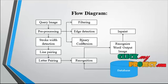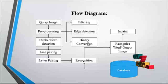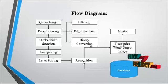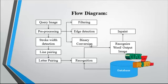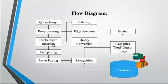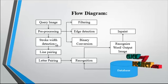After converting the image into binary form, the image has only two values: 0s and 1s. The 0s represent the black area in the image and the 1s represent the white area. After the binary conversion, stroke width detection is undertaken, and the segmented word will be in binary format.